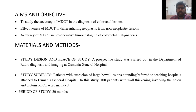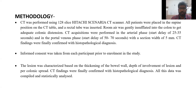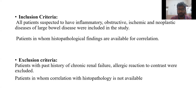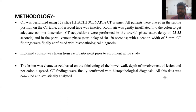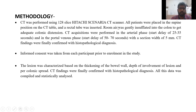This prospective study was carried out in the Department of Radiodiagnosis and Imaging at Osmani General Hospital. Patients with suspicion of large bowel lesions were included. CT was performed using a 128-slice scanner. All patients were placed in the same position on the CT table, and a tube was gently introduced into the colon to achieve adequate colonic distension. Imaging was performed in arterial and portal venous phases with 5 mm sections. Informed consent was obtained from each patient prior to enrollment.